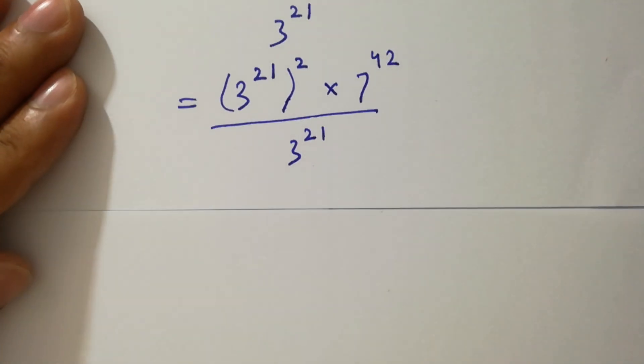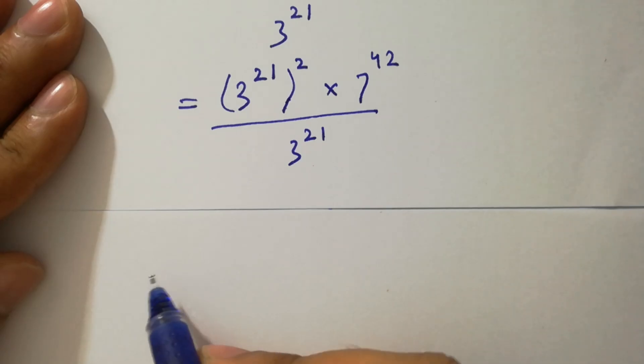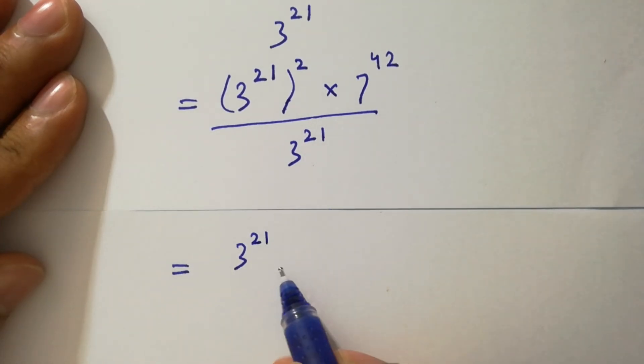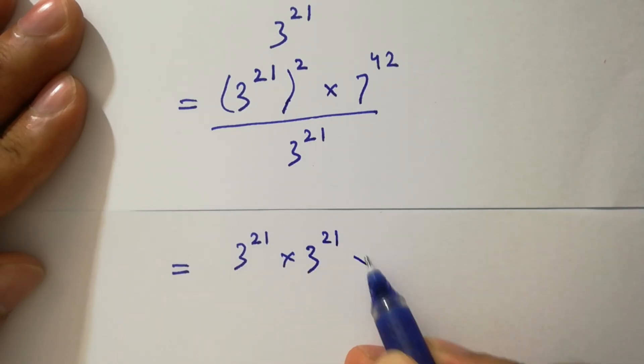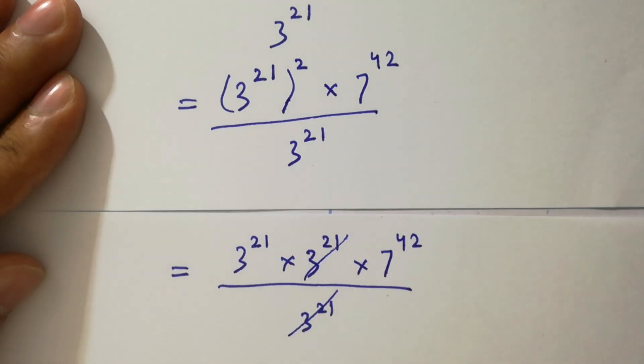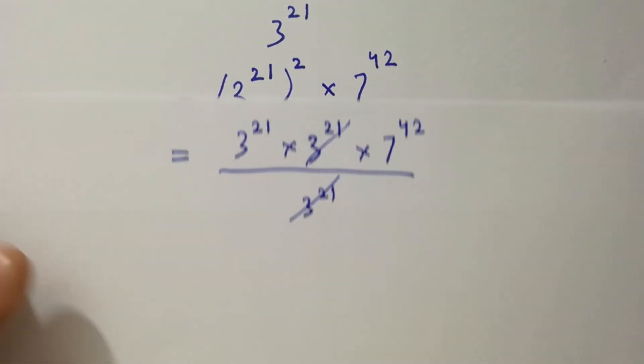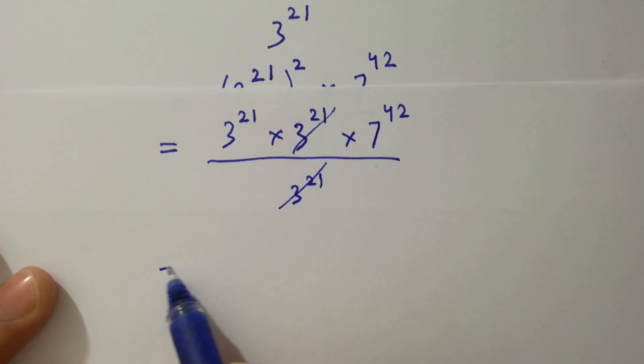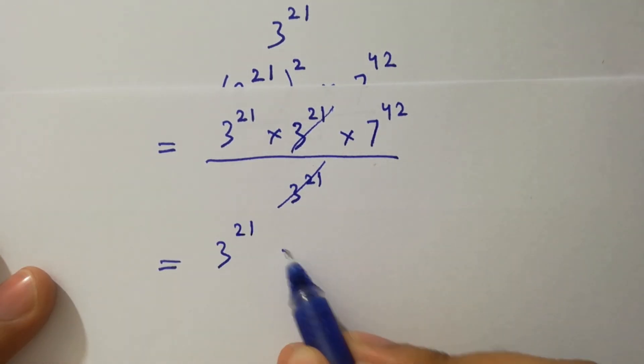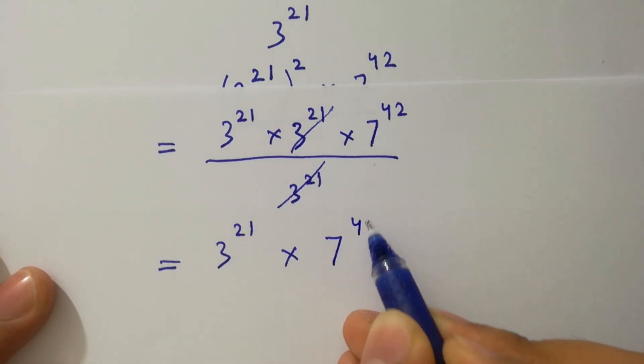This is the same as 3 to the power 21 times 3 to the power 21 times 7 to the power 42 over 3 to the power 21 as it is. Where 3 to the power 21 cancels, we get 3 to the power 21 times 7 to the power 42.